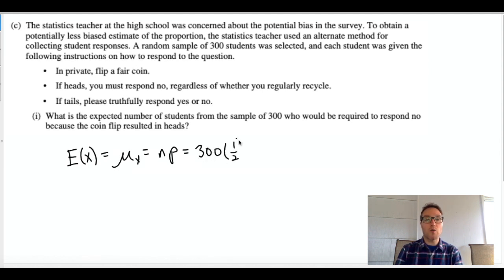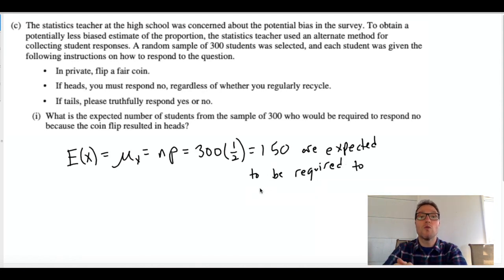So part I of part C wants to know what the expected number is. Since this is a binomial probability experiment, the mean or expected value is n times p, and I think that's on the reference table. n times p here would be 150, so if everyone's flipping a coin we'd expect 150 out of 300 to be required to respond no because those are the ones that flip to heads. We'd expect around 150 heads and 150 tails. That's the expected value. That was pretty easy.